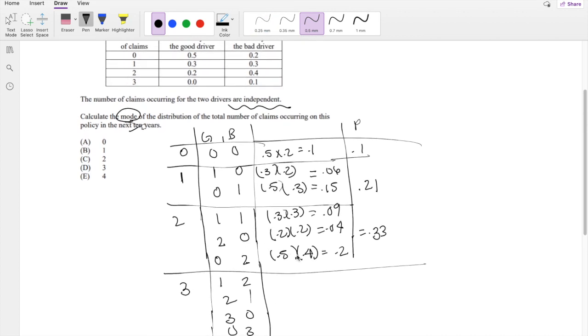When good driver has 1, that is 0.3. Bad driver has 2, that is 0.4. Good driver has 2, that's 0.2. Bad driver has 1, that's 0.3.